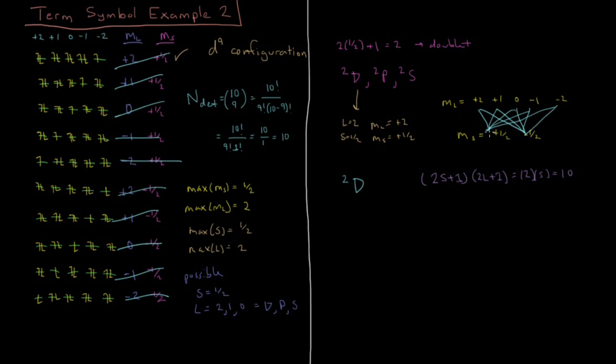We've accounted for all 10. There are 5 arrows going up from here, 5 from here, and 2 arrows from each value. We've accounted for every possibility of M_L and M_S for a doublet D term symbol. Our doublet D is in fact the entire list because we've crossed out all possible determinants, all electron configurations within that D subshell, this D9.